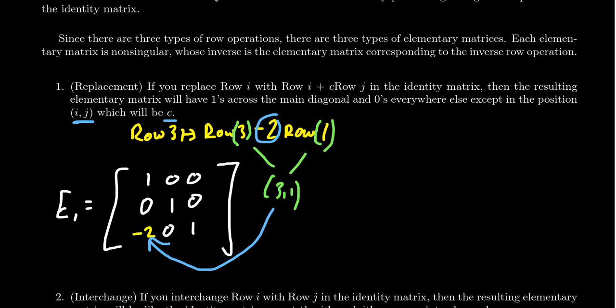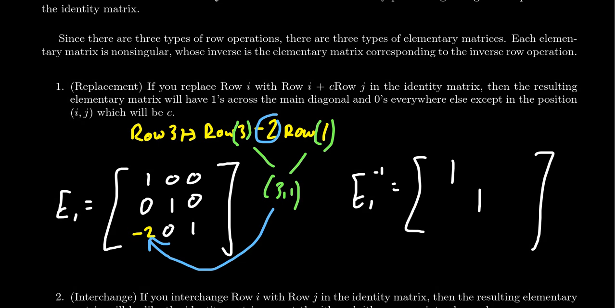In the i,j position, we put the number c, where i and j represent the rows being combined in that order — and the order does matter. I claimed that this replacement matrix is non-singular, and the inverse of this matrix is also going to be a row replacement. You get 1s along the diagonals, 0s everywhere else, except the one non-zero entry — in this case negative 2 — which you replace with its negative, so negative 2 becomes positive 2.